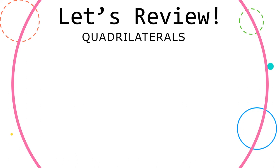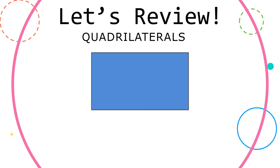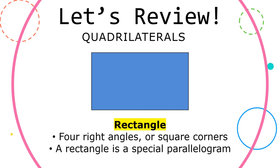Let's take a look at our next quadrilateral — it's a rectangle. Rectangles have four right angles or square corners. A rectangle is a special kind of parallelogram.